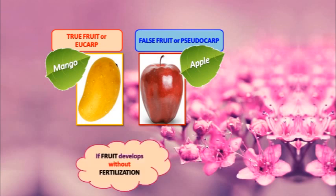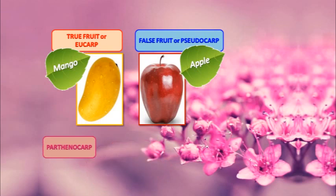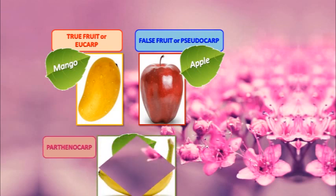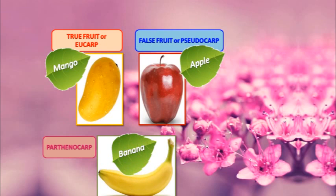If fruit develops without fertilization, then that is known as parthenocarp. Example is banana.